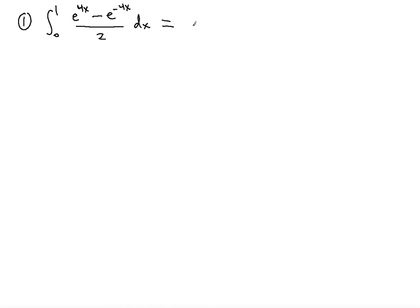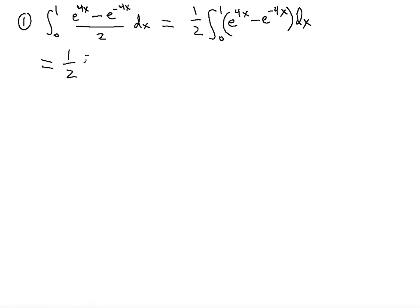Notice immediately that you can split this into two integrals. You can take out the half first, so from 0 to 1 of (e to the 4x minus e to the negative 4x) dx. It's better to split it into two because you will need a u-substitution. So we're going to have 1 half from 0 to 1 of e to the 4x dx, minus 1 half from 0 to 1 of e to the negative 4x dx.